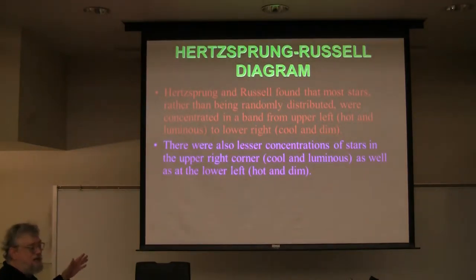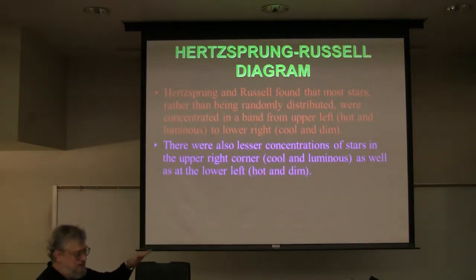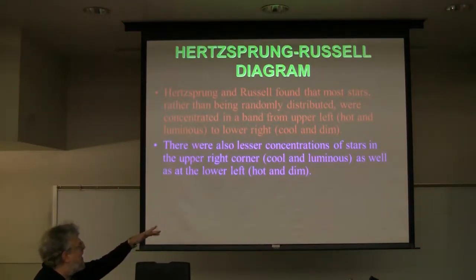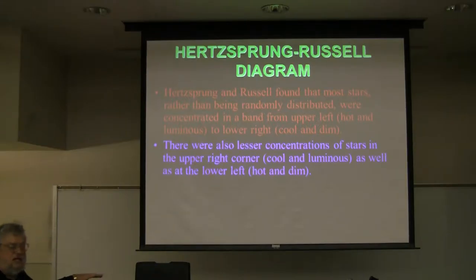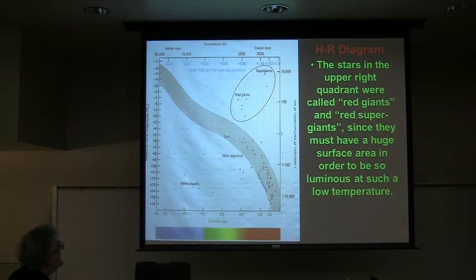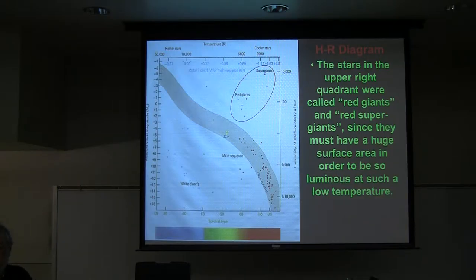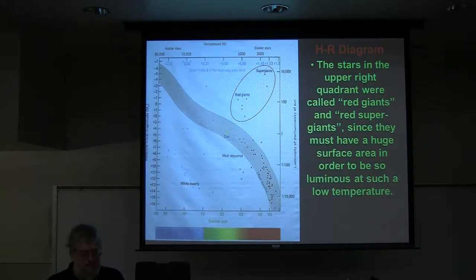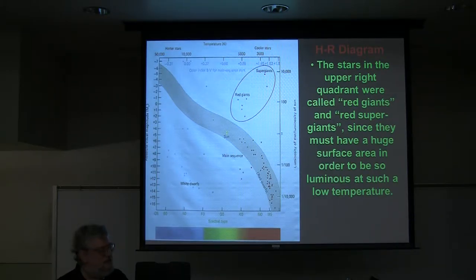There are also stars in other parts of the diagram — such as in the upper right corner where they were not just cool, but also luminous, and other strange ones down at the lower left that were very hot but dim. If something is very low temperature, just barely glowing, yet it's extremely luminous, what's the only conclusion you can draw? It's got to be very big.